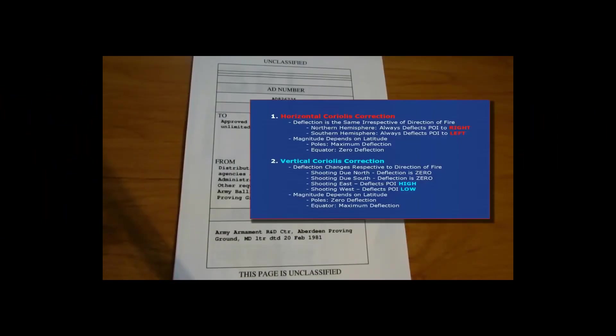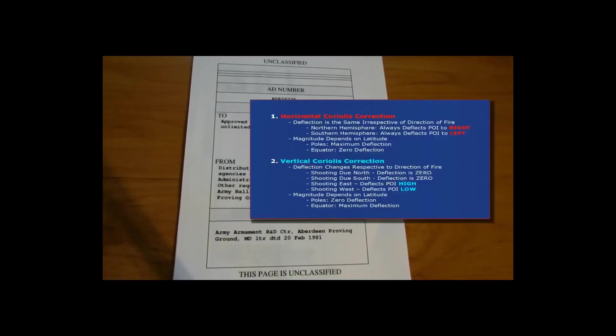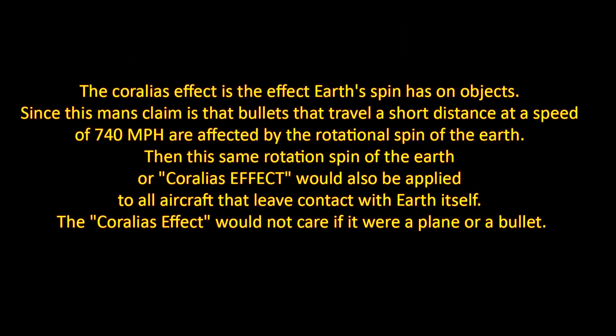The differences between horizontal and vertical Coriolis effect for the purposes of long-range rifle shooting. The Coriolis effect is the effect Earth's spin has on objects. This man claims that even a bullet traveling 740 miles per hour at a short distance is affected by the rotational spin of the Earth.